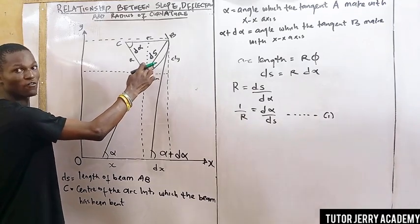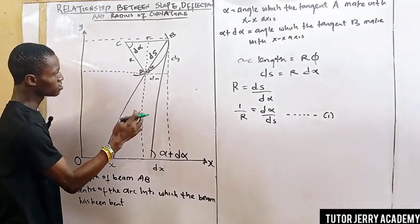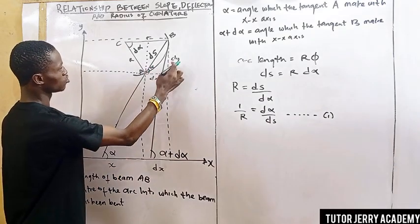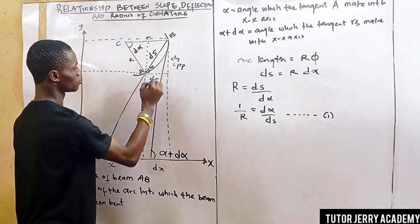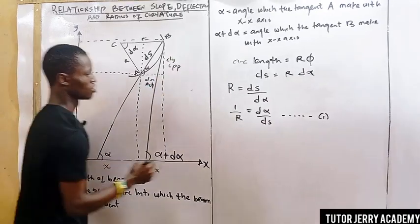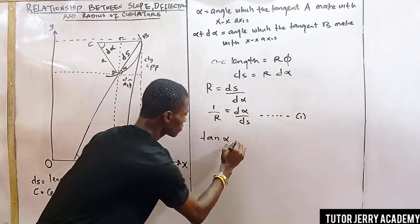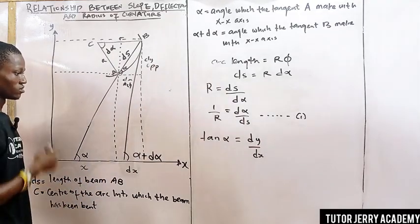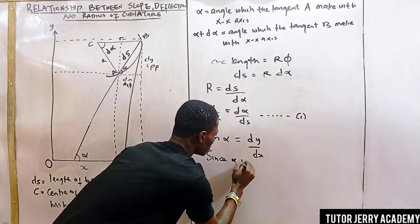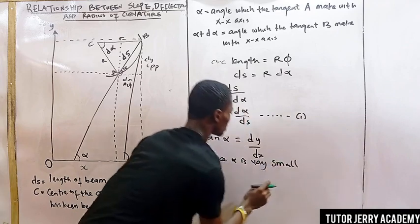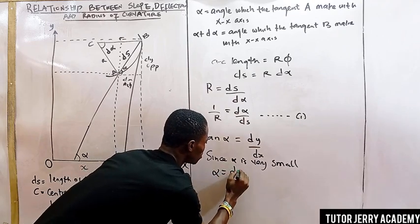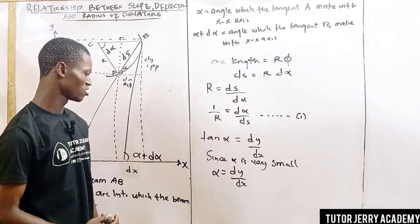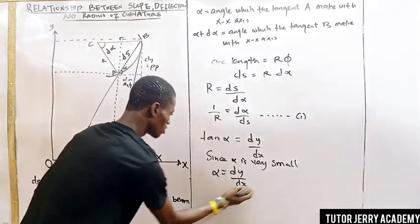Here we have the angle subtended by the tangent. Taking the tangent of this angle, tan alpha equals opposite over adjacent, which gives us dy over dx. So tan alpha equals dy over dx. Since alpha is very small, we can say that alpha equals dy over dx — that is, alpha is the angle subtended by the tangent.